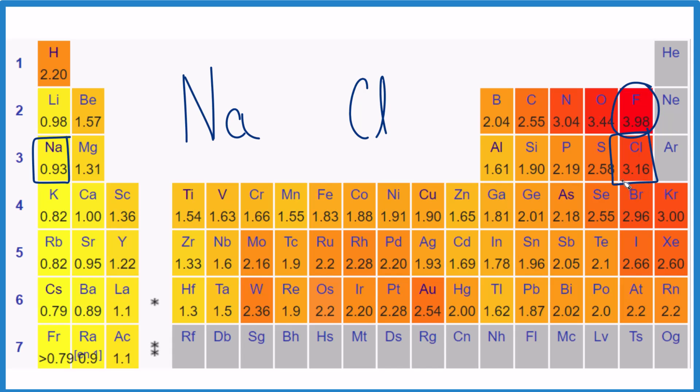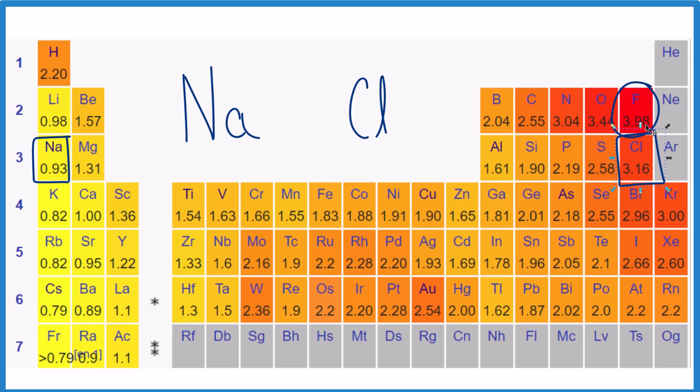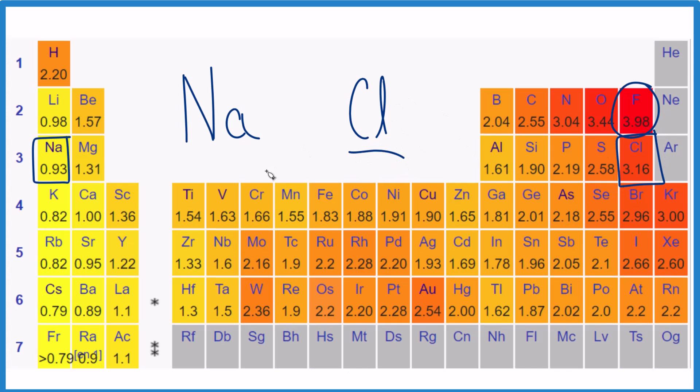So because this chlorine atom is much closer to fluorine, we know that chlorine is going to be more electronegative than sodium.